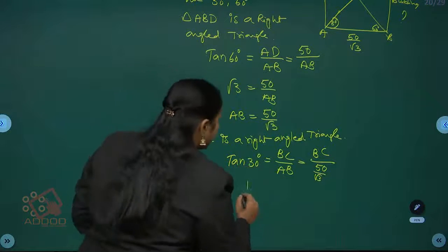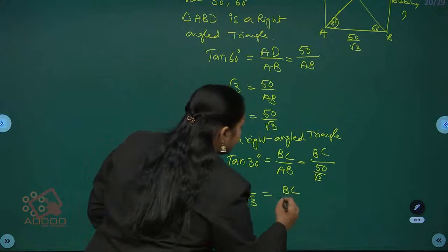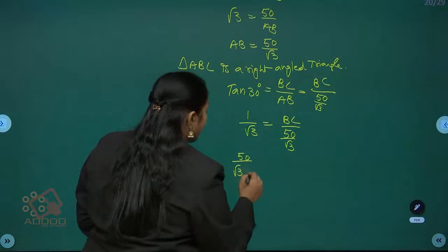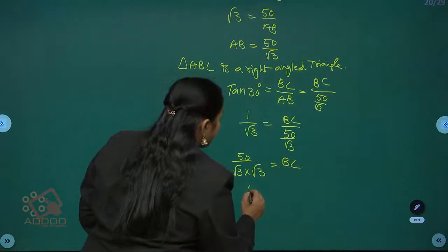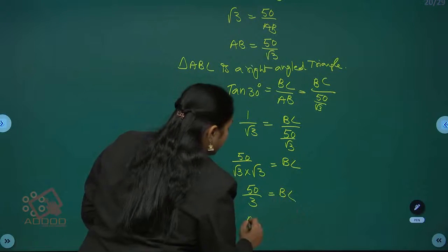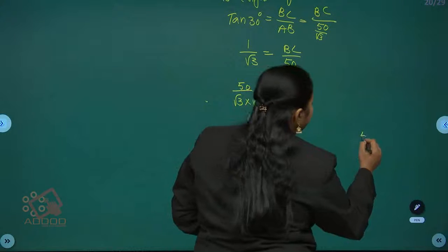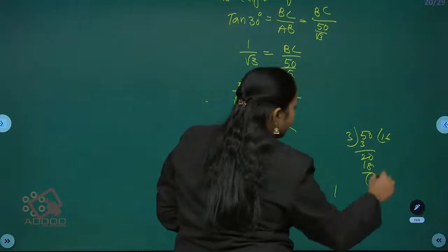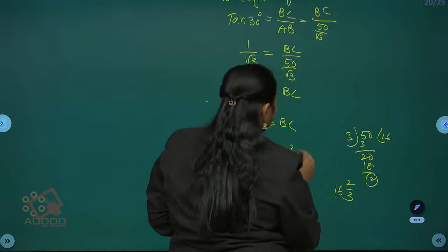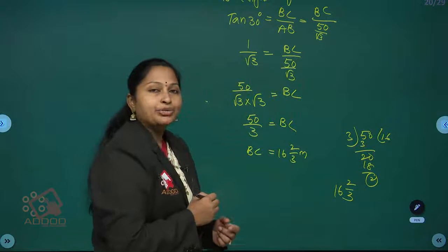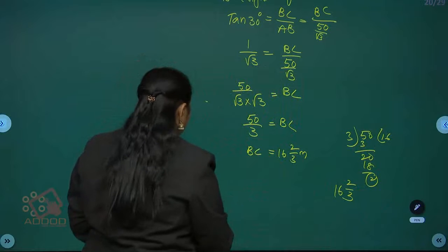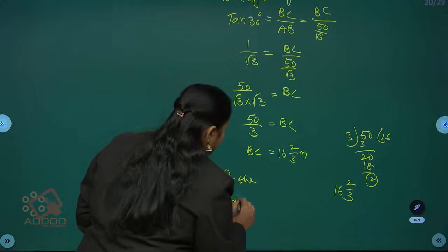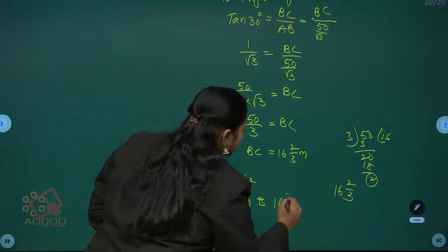Tan 30 is 1 by root 3, equals BC divided by (50 by root 3). Doing cross multiplication: 50 by root 3 into root 3 equals BC. From this, BC equals 50 divided by 3, which is 16 and 2/3 meters. Therefore the height of the building is 16 and 2/3 meters.